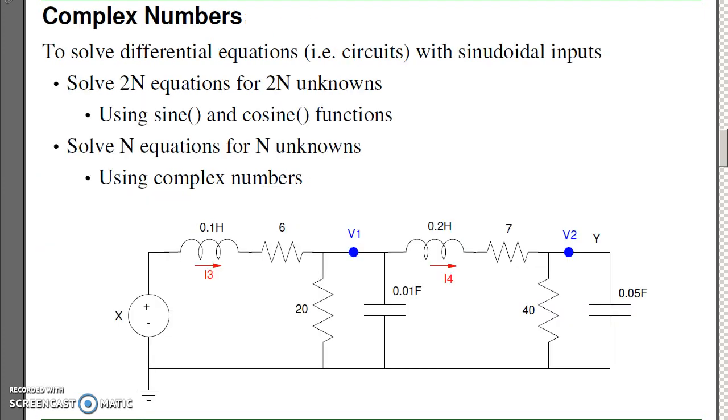Complex numbers are what electrical engineers use. They allow you to solve circuits with sinusoidal inputs just by using a single number to represent the sine and the cosine. If you didn't use complex numbers, you'd wind up with twice as many equations. So likewise, using complex numbers does make life a lot easier.